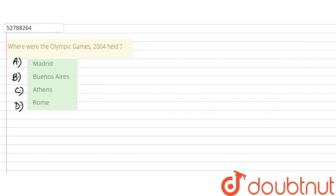Hello everyone! Today's question is, where were the Olympic Games 2004 held? And the options given to us are A: Madrid, B: Buenos Aires, C: Athens and D: